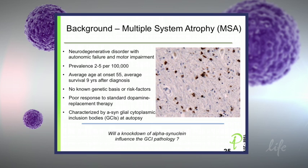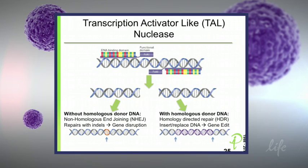Pathologically, we see alpha-synuclein glial cytoplasmic inclusions — not like the Lewy bodies that are in neurons, but here we find them in glia. What we wanted to do is knock down alpha-synuclein and see how that influences the pathology. TALENs have two domains: one functional domain to cut the DNA, and one DNA-binding domain to recognize the region of interest. If you don't have a homologous donor DNA, the cell repairs the cut and in some cases you introduce small insertions or deletions resulting in a gene disruption. If you have a homologous donor, you can get a replacement of the DNA by homology-directed repair.